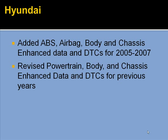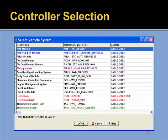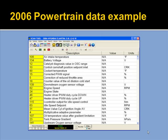For Hyundai, we updated all of the ABS, airbag, body, and chassis enhanced data and DTCs from 2005 through 2007 and revised some of the previous years' information. Here's the vehicle selection tool and the enhanced controllers on a Hyundai Tucson — you can see quite a bit of coverage including ABS, airbag, powertrain, transmission, and so on. Here's an example of some 2007 ABS data on a Hyundai with pretty extensive coverage, and a powertrain data example on an older model.